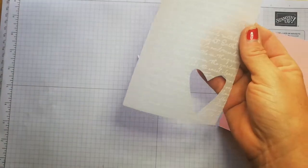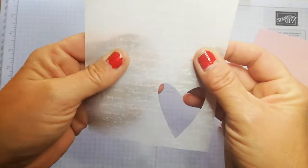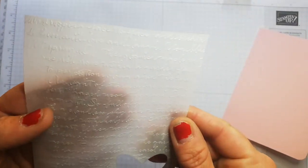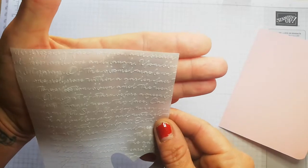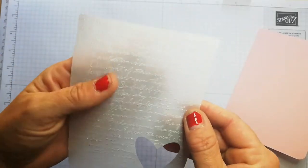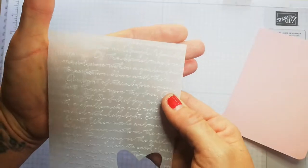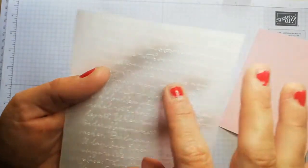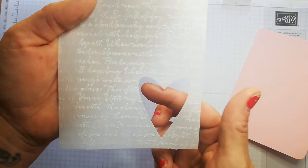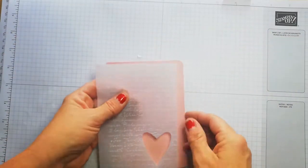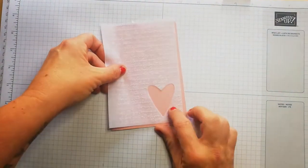That's the inside of my card. I then run this through my script embossing folder, which is part of the Pressed Petal suite. I've got the idea from Stamp with Ian. He sent me a gorgeous card with the same effect. What I've done is I've actually cut out a little heart, and that is going to go on the front of the card.